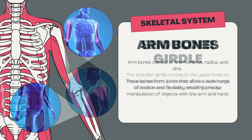The thoracic cage, or rib cage, consists of the sternum and ribs, which protect vital organs and facilitate breathing. The sternum shields the heart, lungs, and stomach. There are 12 pairs of ribs: ribs 1 to 7 are true ribs, connected directly to the sternum; ribs 8 to 10 are false ribs, fused with rib 7; and ribs 11 and 12 are called floating ribs.